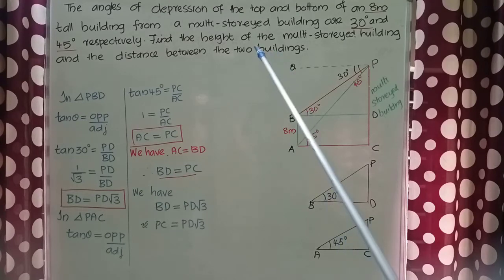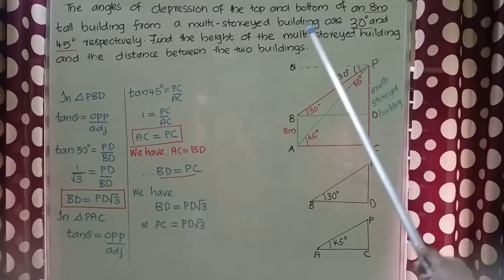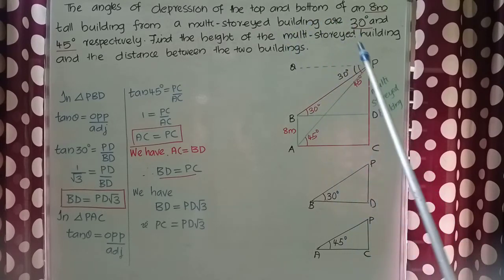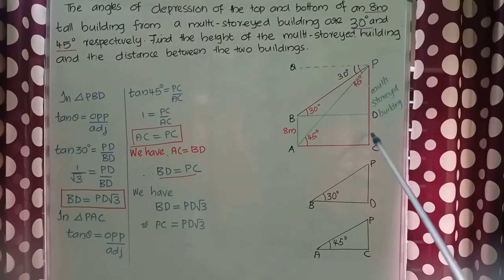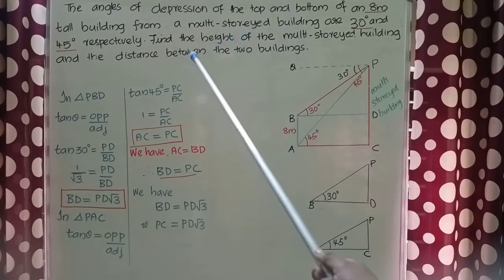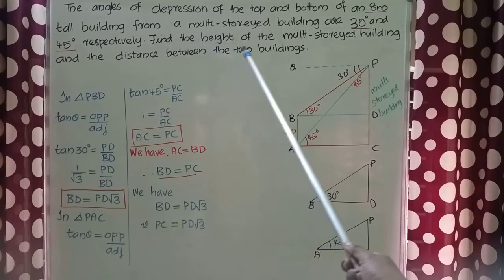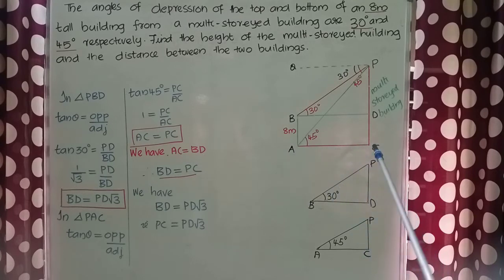The question asks us to find the height of the multi-storied building, which means we need to find the value of PC, since PC is the multi-storied building in the figure. The second part asks for the distance between the two buildings, which means we need to find AC — AC is the distance between the two buildings.